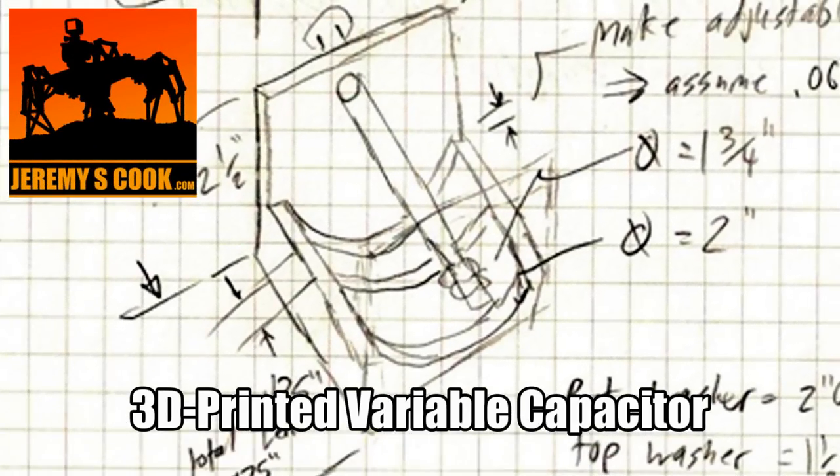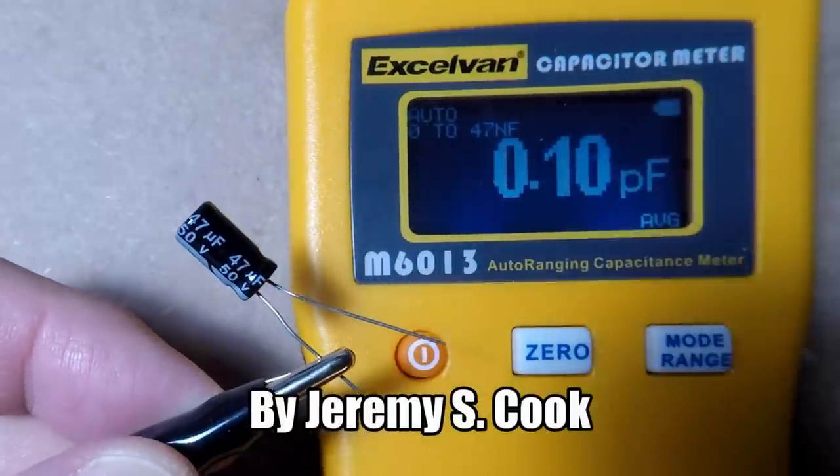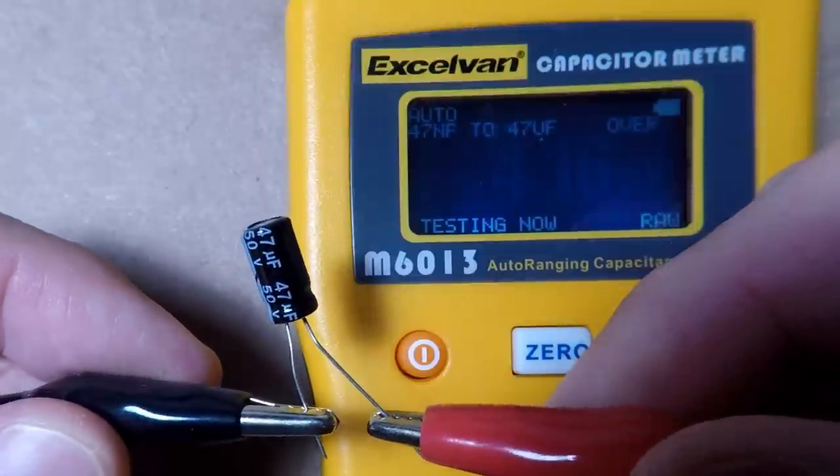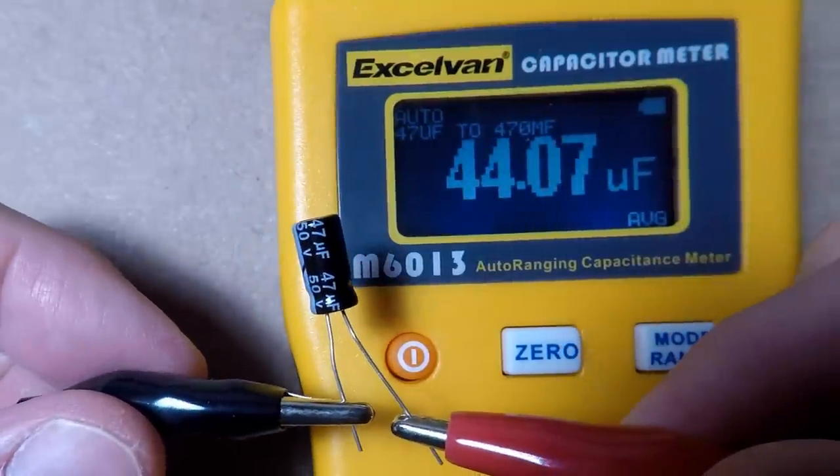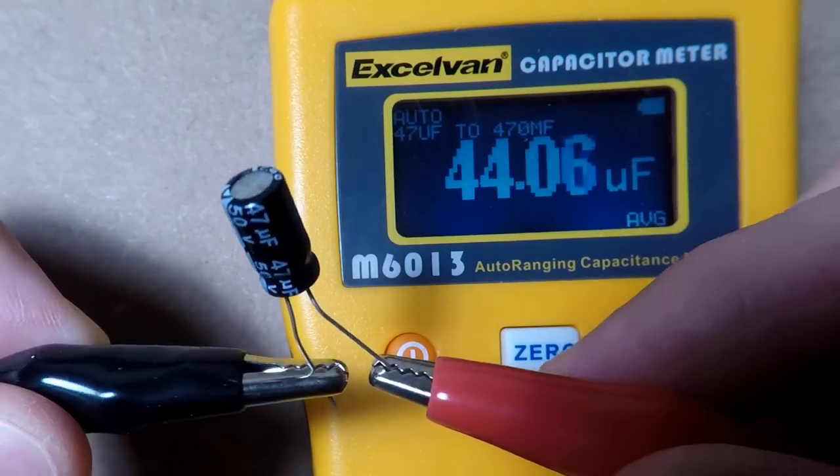Jeremy S. Cook here, and today I'll be making a variable capacitor. Now, it's true that you can just buy a capacitor for a few cents, like this 47 microfarad capacitor. Here you can see me testing it out - it actually only holds about 44, but that's close enough. But what I wanted to make here was actually a variable capacitor.